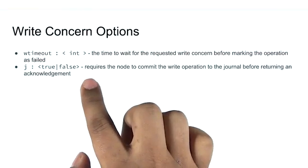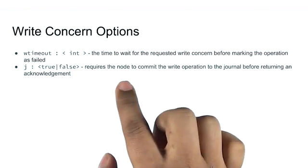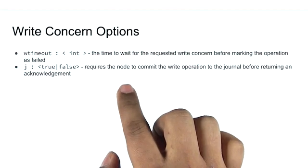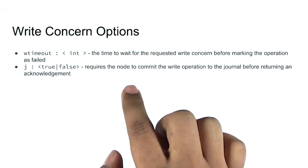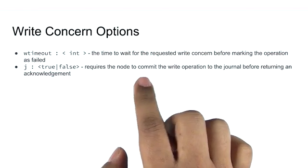The second is J or journal. This option requires that each replica set member receive the write and commit to the journal file for the write to be considered acknowledged.